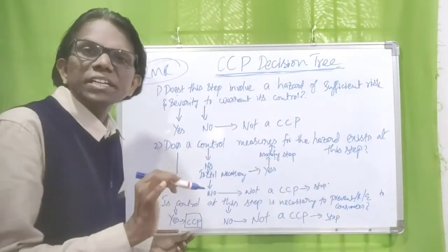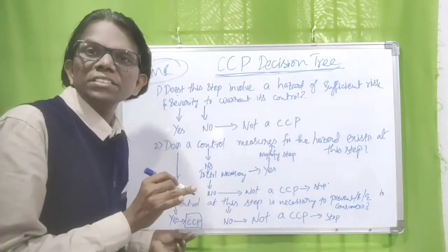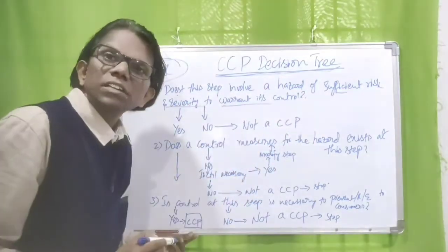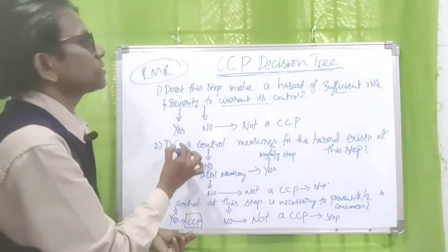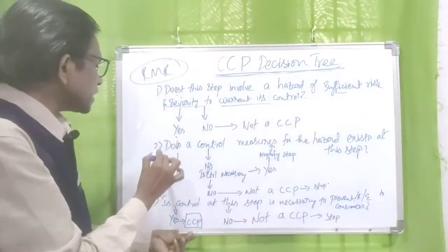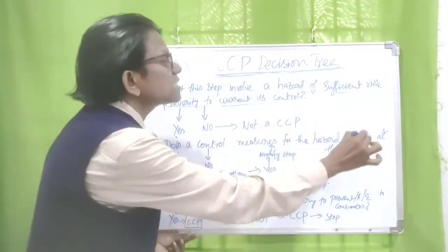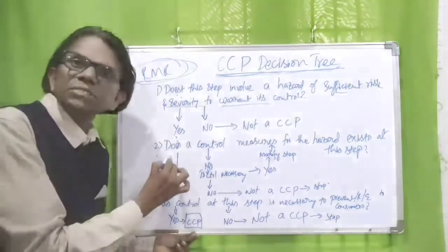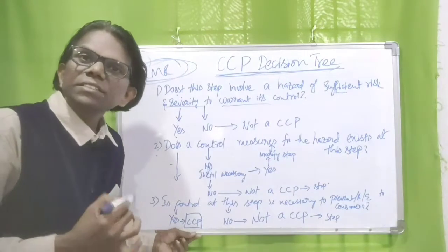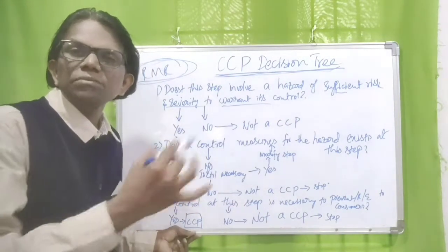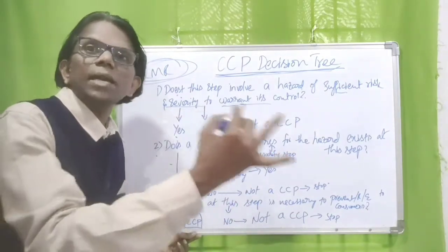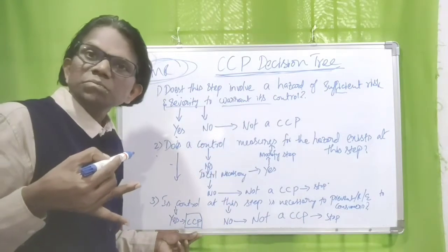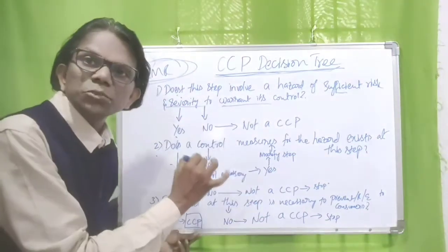Yes — for scombridae fish, if temperature abuse occurs after harvest, during transit, or before receipt, time and temperature abuse can lead to the formation of histamine, which presents a significant risk and severity to consumers. So the first question is yes. The second question: does a control measure for the hazard exist at this raw material receiving stage? Yes — controls exist. The controls are taking a time and temperature control record from the harvest vessel.